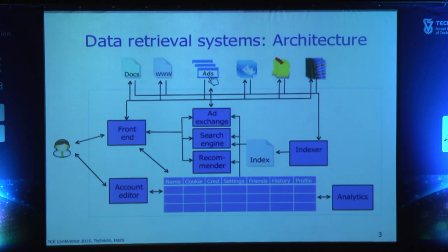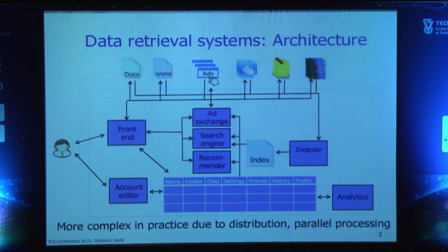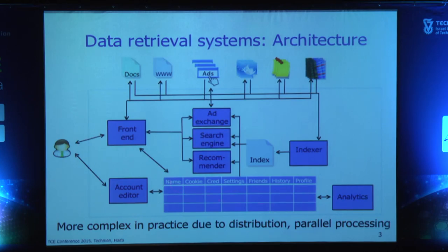In practice, this is far more complicated due to distribution and parallel processing. The indexer and analytics engine typically take the form of large MapReduce jobs. The search engine itself is widely parallelized and distributed. Even the data maintained by the system, such as the online social network, is often stored in multiple representations each optimized for different types of accesses. It's a really complicated system with a non-trivial data flow.